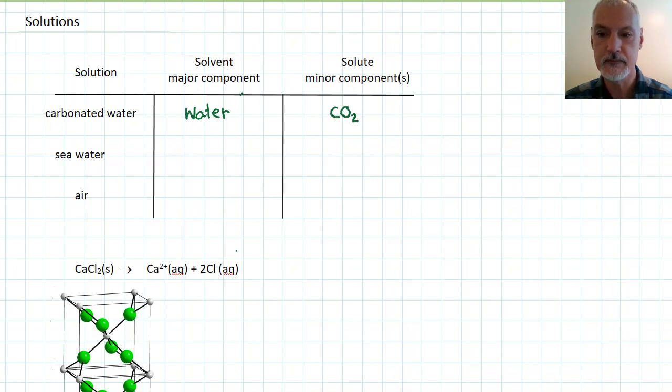Another example of a solution is sea water. Again, the major component being water and the minor component being sodium chloride, but it wouldn't be the only minor component. It makes up about 3% of seawater. Other substances that could be present include magnesium chloride in small amounts, as well as sodium sulfate and some potassium salts as well.